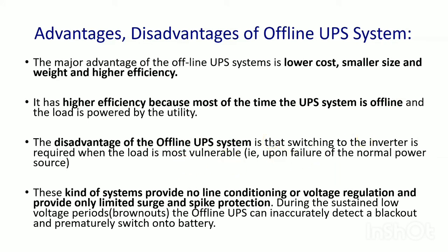The disadvantages of offline UPS include switching time, which can be problematic in critical applications. These systems provide no line conditioning or voltage regulation and offer only limited surge and spike protection. In online UPS, protection from surges and voltage spikes is available, but offline UPS — normally being in offline mode — cannot protect against such mains line disturbances.